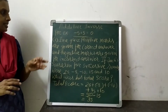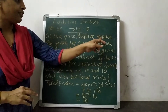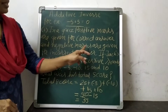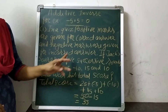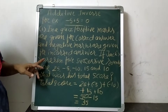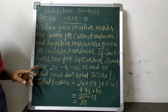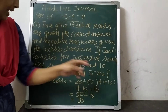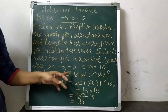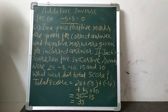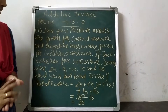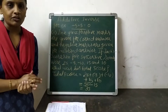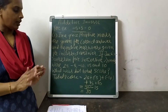First word problem is like this. In a quiz, positive marks are given for correct answers and negative marks are given for incorrect answers. If Jack's score in 5 successive rounds were 25, minus 5, minus 10, 15 and 10, what was his total score? Here we have to find out the total score of Jack. When we have to find out total score, we add all the numbers.